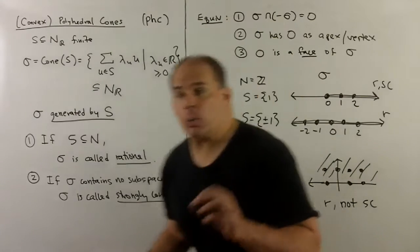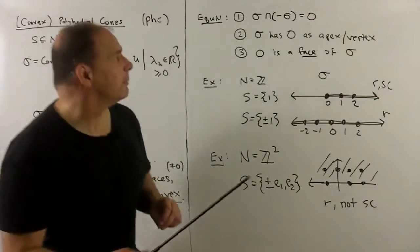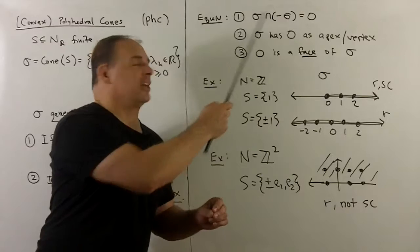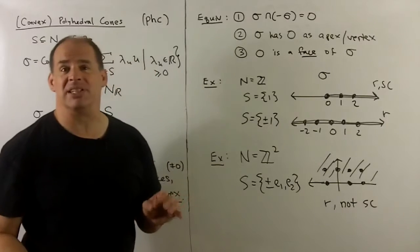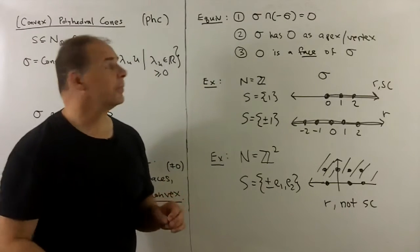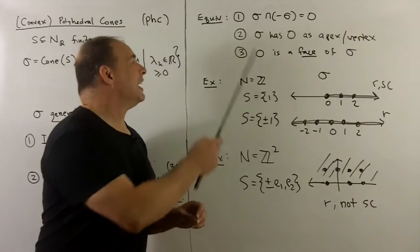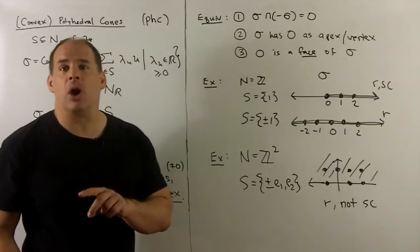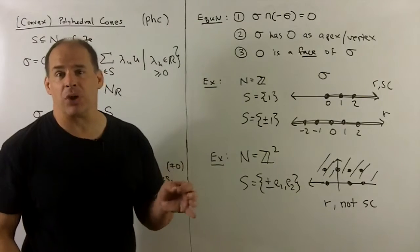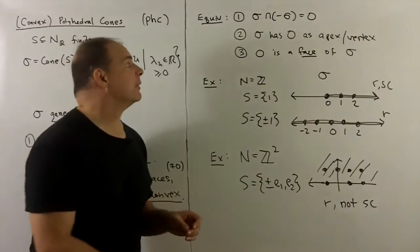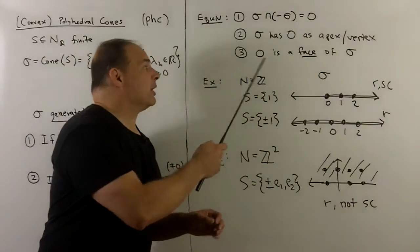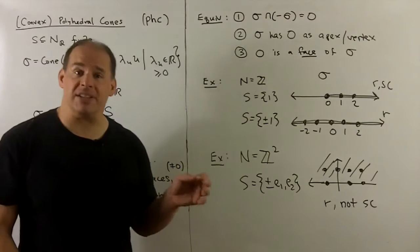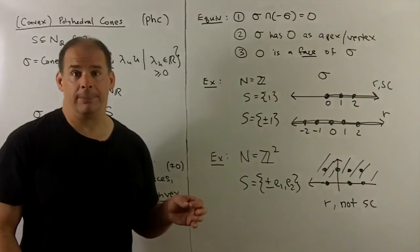Other ways to characterize strongly convex: first, sigma intersect minus sigma equals zero. Next, sigma has zero as an apex or vertex. Finally, zero is a face of sigma. We'll talk about faces in a little bit.